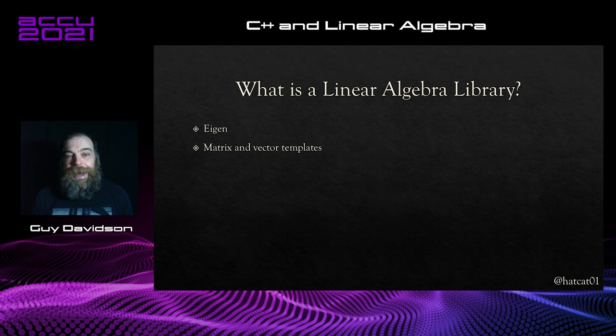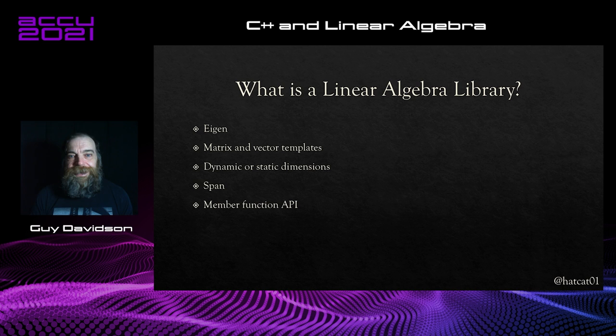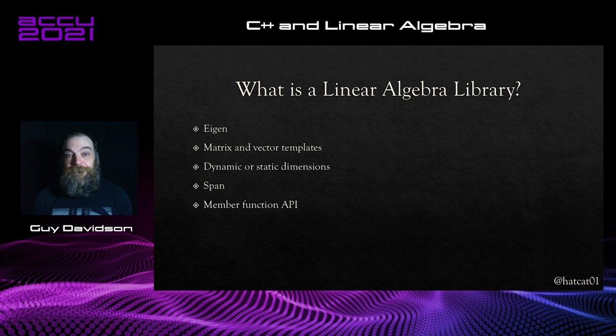Next we have Eigen — a C++ library with matrix and vector templates. Dimensions can be declared statically or calculated at runtime, and there is a span object for viewing unowned data. The API consists of member functions, which makes me slightly uneasy — we've learned the cost of rich member APIs, and std::string is the poster child for this. I should remark that although I've mentioned inverses and determinants, these won't feature in the proposal. We are purely defining the matrix type and the infix operators — really this is about reserving matrix and the infix operators.